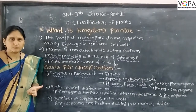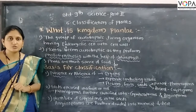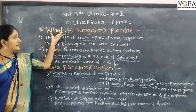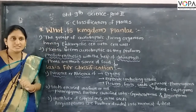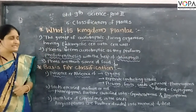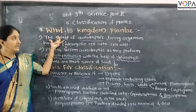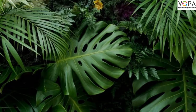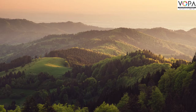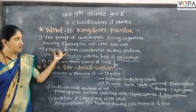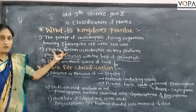Welcome to the Classification of Living Organisms. What is Kingdom Plantae? It is a group of autotrophic living organisms. Our plan is in the autotrophic living organisms.